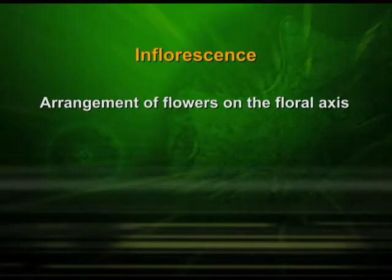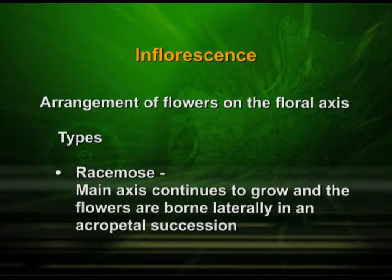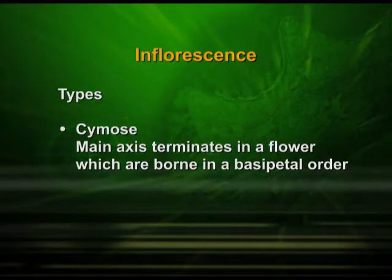Inflorescence — the arrangement of flowers on the floral axis — is referred to as inflorescence. There are two types of inflorescence: the first is the racemose inflorescence and the second is the cymose inflorescence. In racemose inflorescence, the main axis continues to grow and the flowers are borne laterally in acropetal succession. In cymose inflorescence, the main axis terminates in a flower, which are borne in a basipetal order.